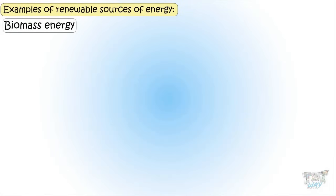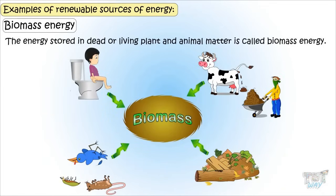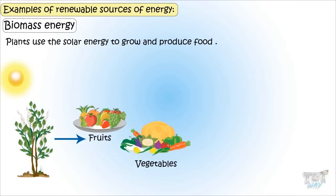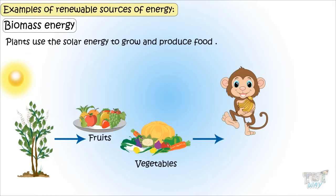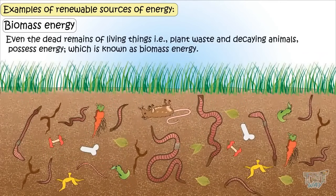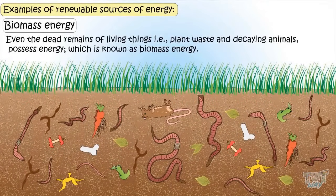Next is biomass energy, or the energy stored in dead or living plant and animal matter. Plants use the solar energy to grow and produce fruit. And these fruits, vegetables, all store energy. This energy is transferred to those who eat it, animals or humans. So the energy is stored in all living organisms, living or once living.